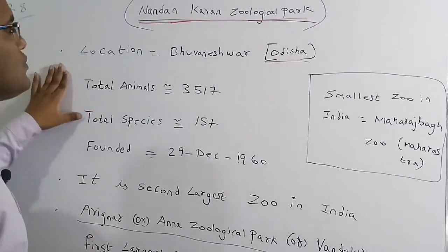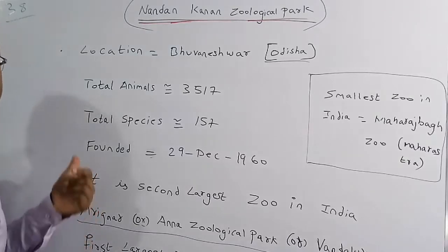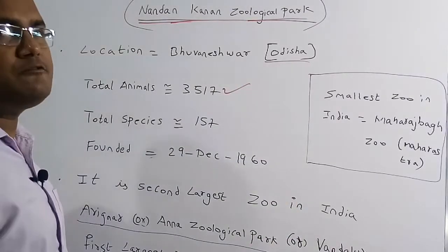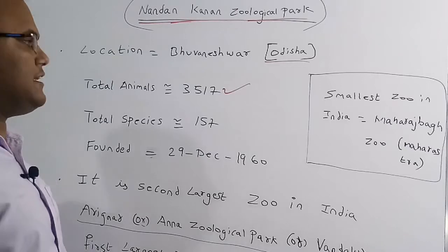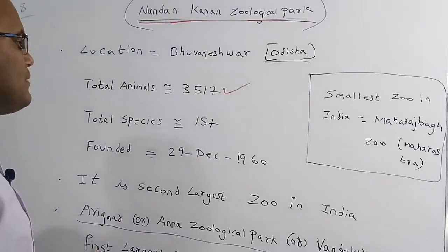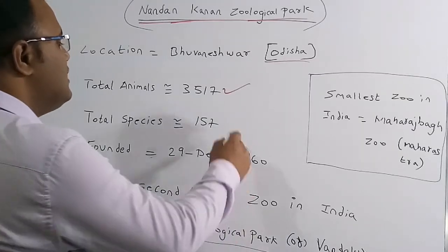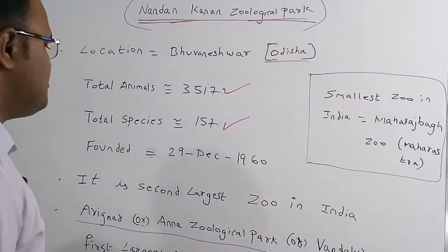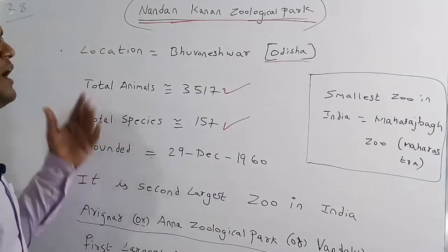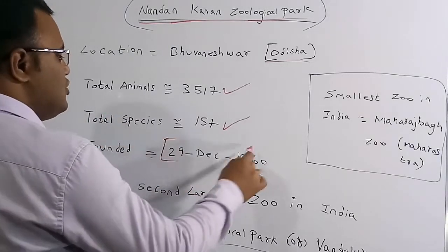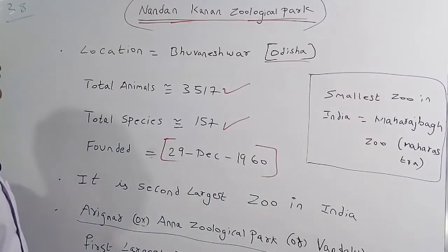The total number of animals in this zoo is nearly 3,517 as per the latest data. The total variety of species present is 157 as per the latest data. This park was founded on 29th December 1960.